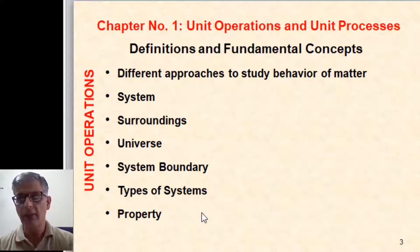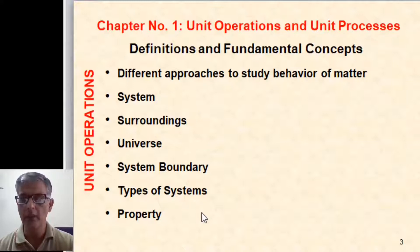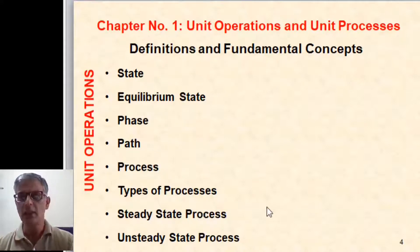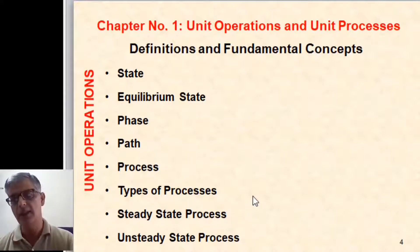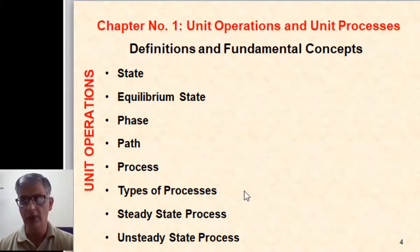We will discuss what is the difference between physical change and chemical change. First we will cover definitions and fundamental concepts, including different approaches to study behavior of matter, system, surroundings, universe, system boundary, types of systems, property, state, equilibrium state, phase, path, process, types of processes, steady state, and unsteady state processes. These are the basic terms you need to understand before we proceed further.